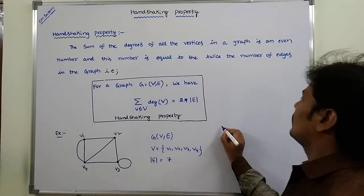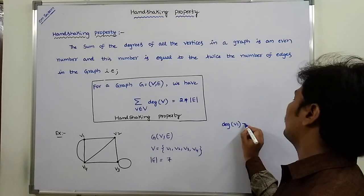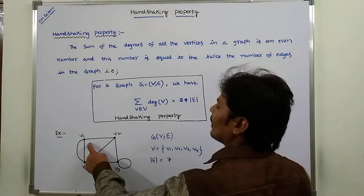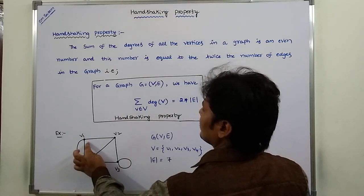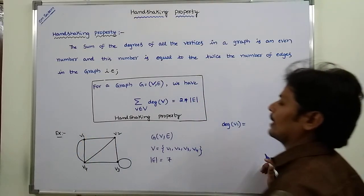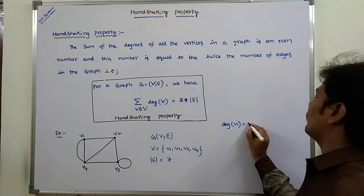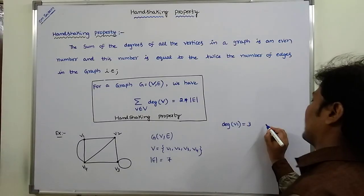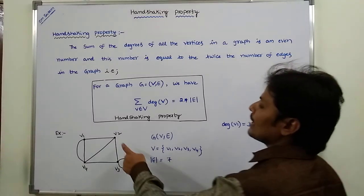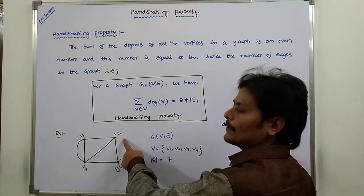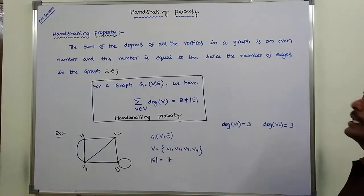Now, degree of V1. The degree of V1 is the number of edges incident on the vertex. There is one edge, another edge, and another edge — three edges are incident on vertex V1. So degree of V1 is equal to 3. Next, degree of V2 — how many edges are incident on vertex V2? 1, 2, 3. So degree of V2 is equal to 3.